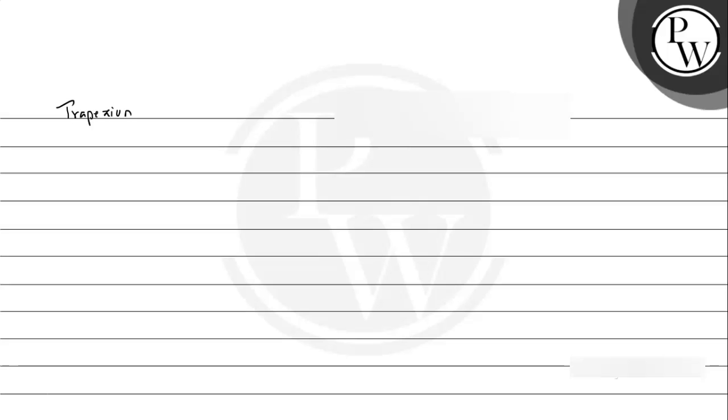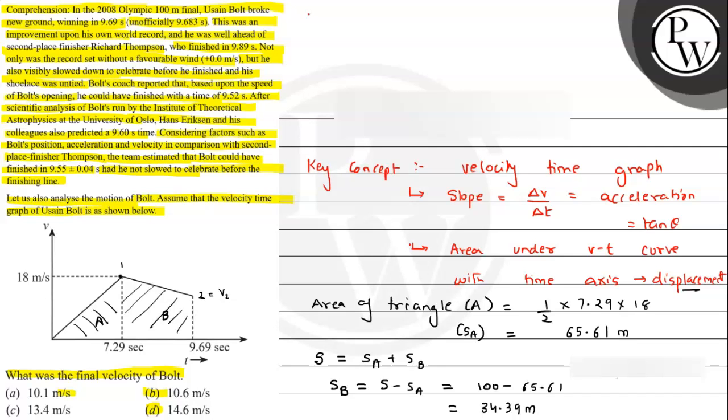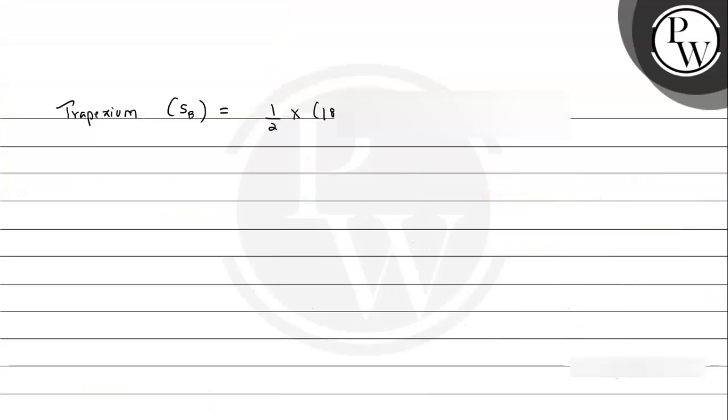So area of trapezium, and it is nothing but S_B, that is area of trapezium which will be representing displacement B in the shaded region. So it will be equals to area of trapezium is half into sum of the parallel sides. Sum of parallel sides will be, if we look at it, one is 18 meters per second and the other is V2.